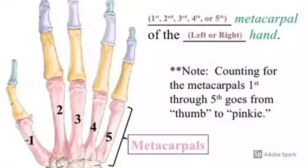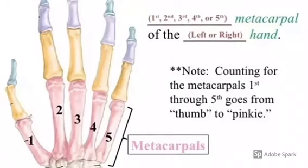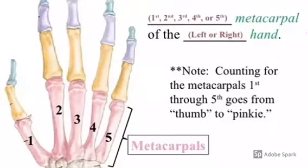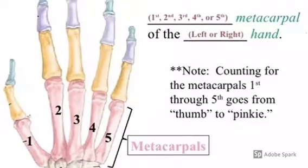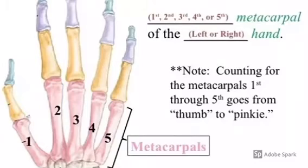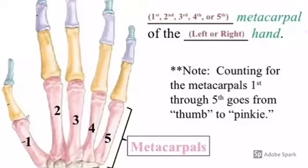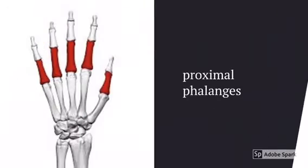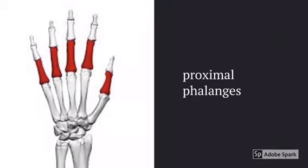The pink bones are the metacarpals. Note that the metacarpals count from one through five going from thumb to pinky. These are your proximal phalanges, again counting one through five going thumb to pinky.